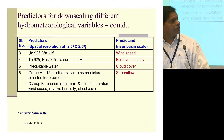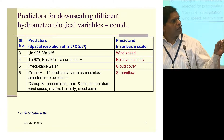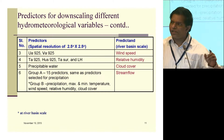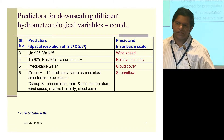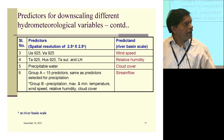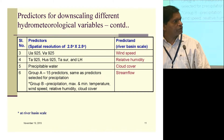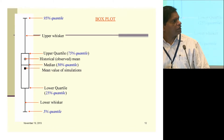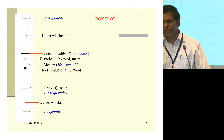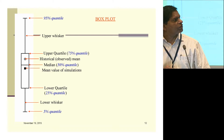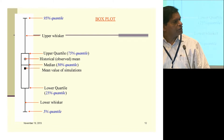For each of these variables we downscaled information for the next hundred years, shown with uncertainty bands in the form of box plots. Each box plot shows the historical or observed mean, the mean value of simulations, and quantiles, so that the spread and uncertainty of projections can be visualized.